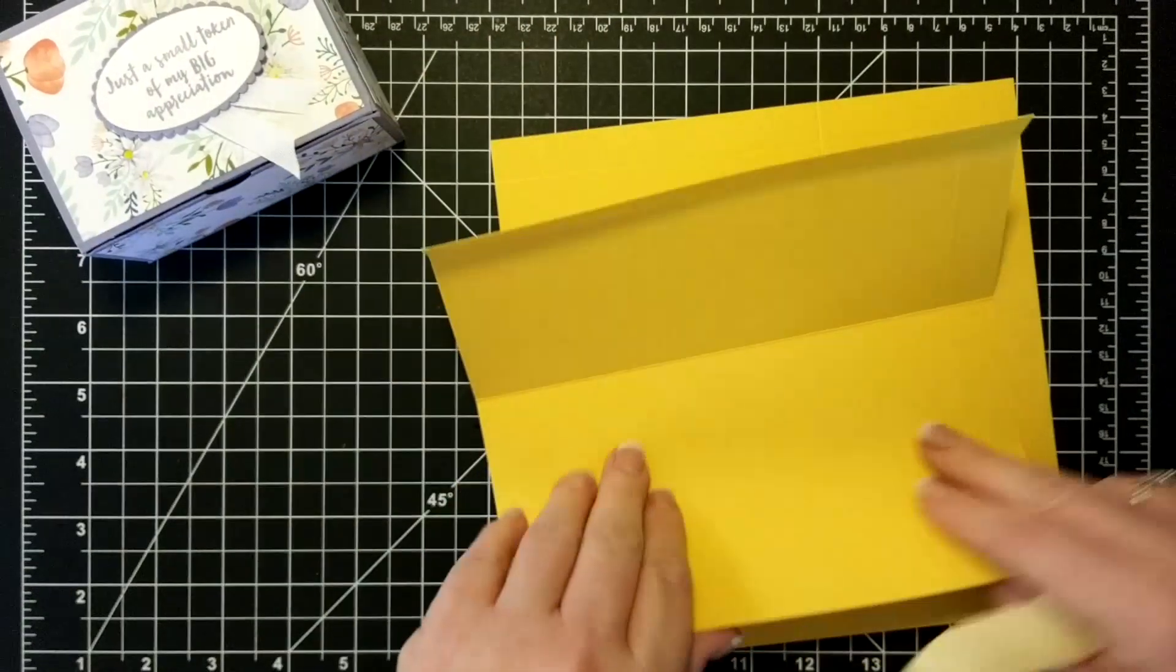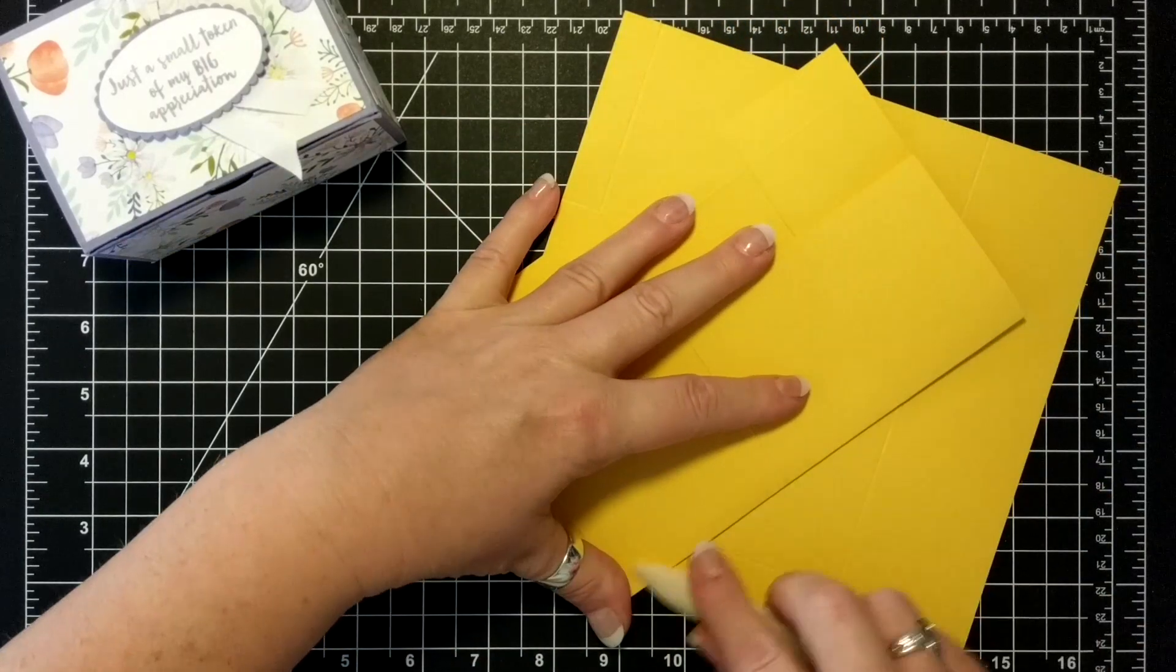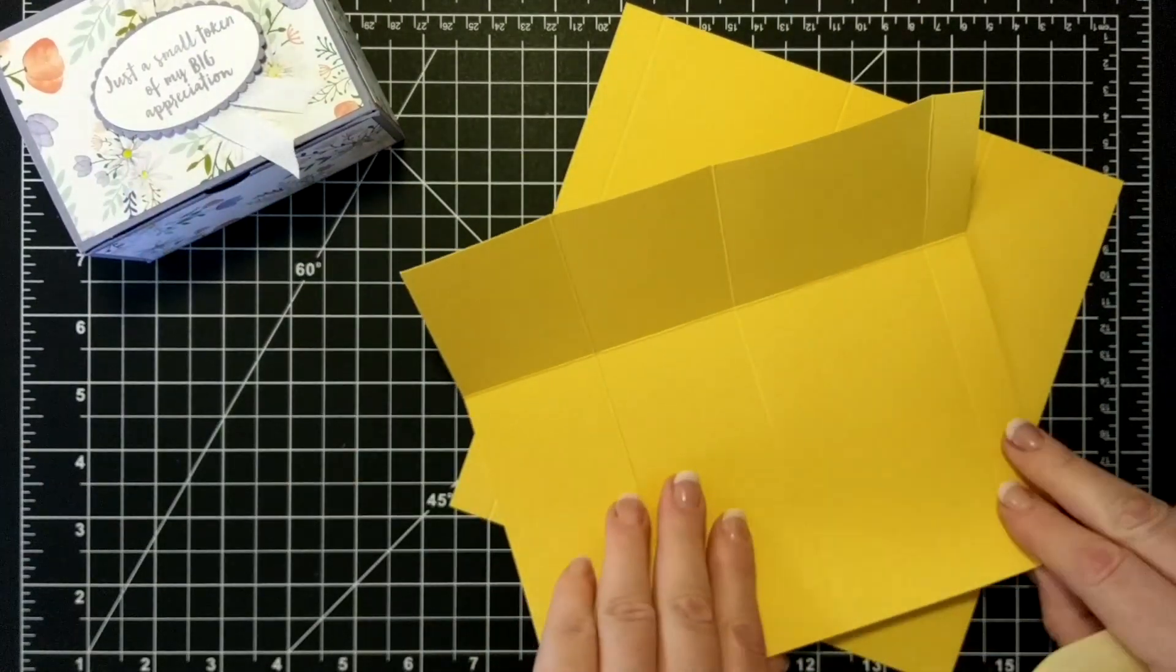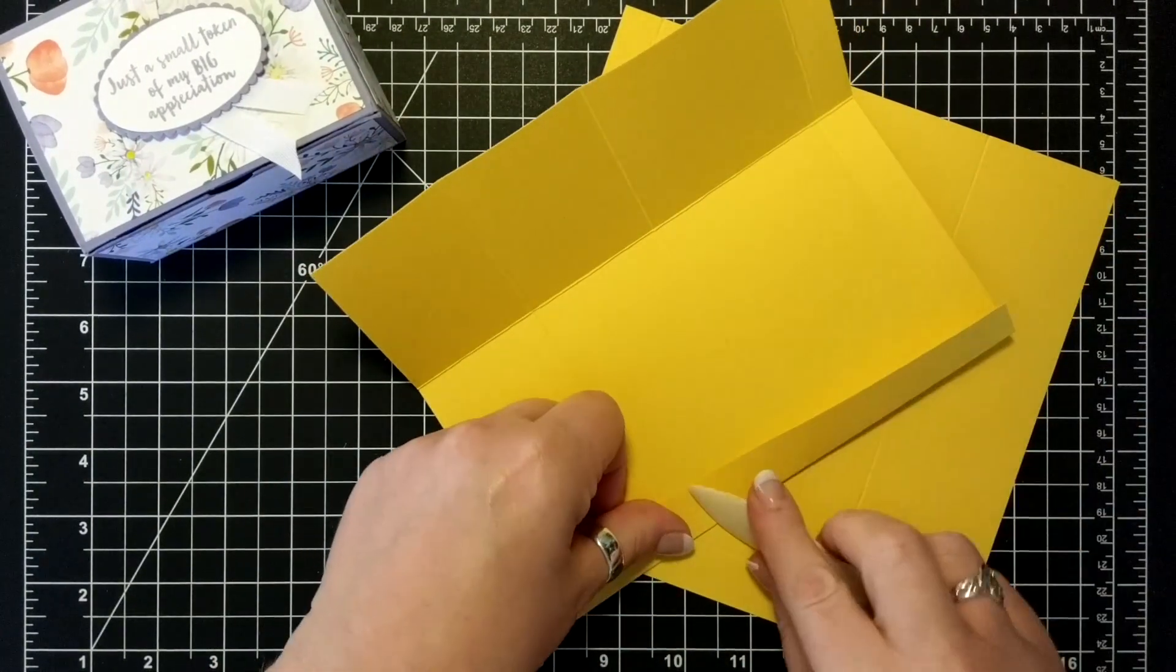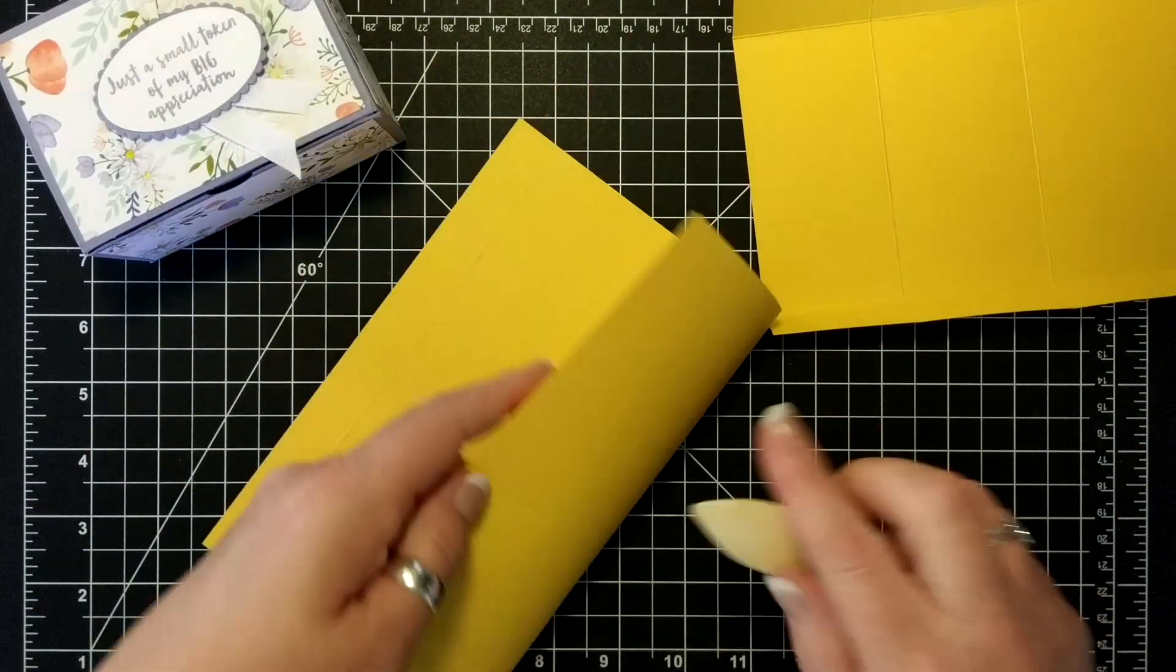So we're going to fold and burnish all the score lines on both.